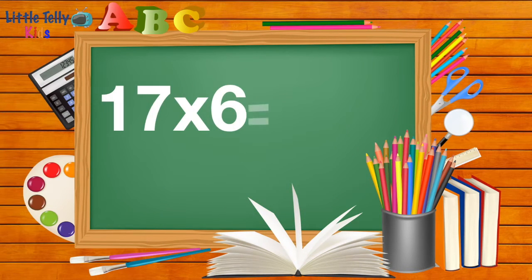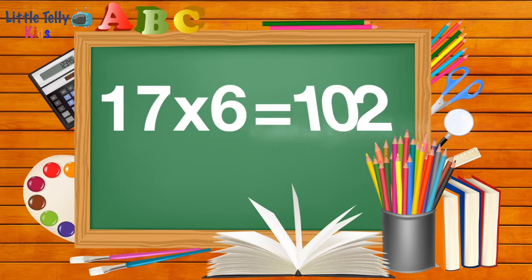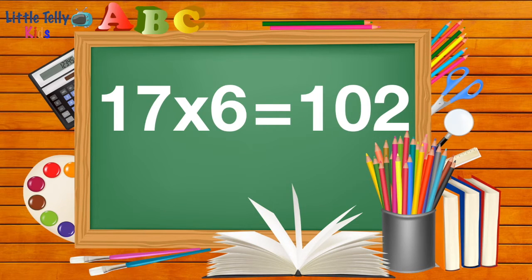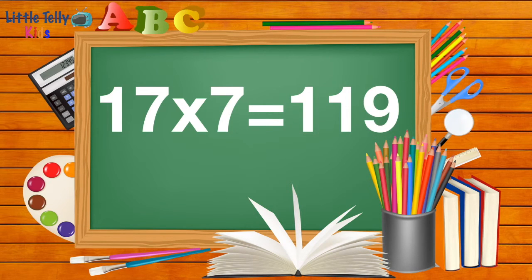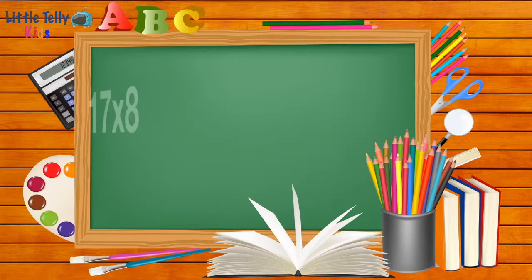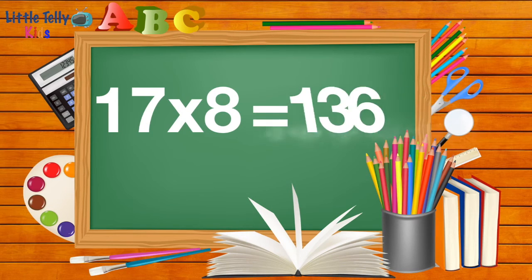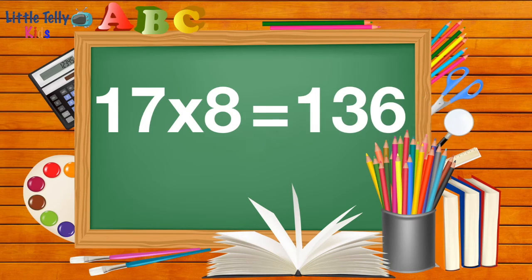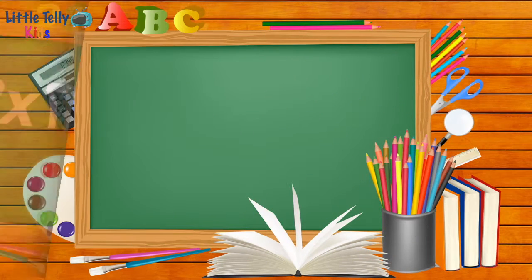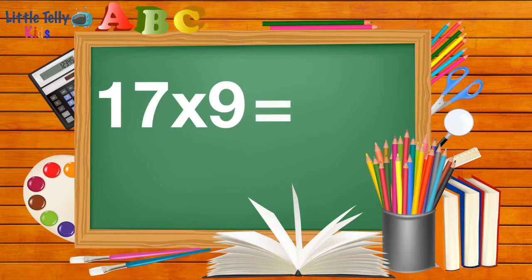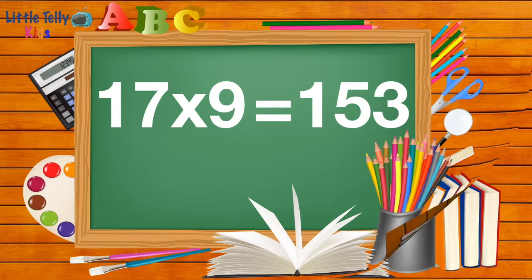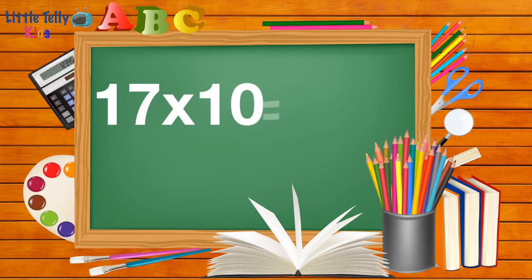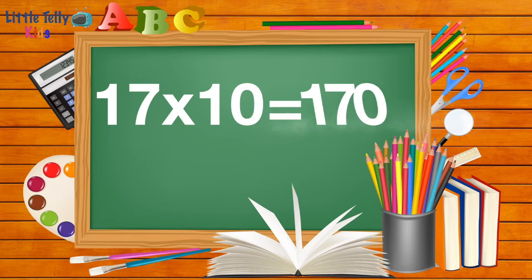17 sixes are 102. 17 sevens are 119. 17 eights are 136. 17 nines are 153. 17 tens are 170.